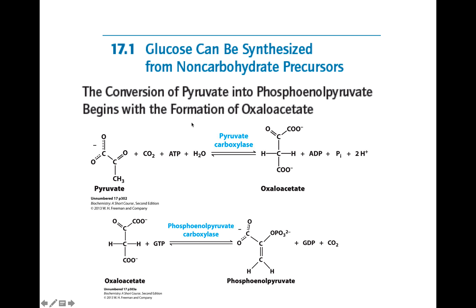If you think of glycolysis going from top down, then gluconeogenesis is going from the bottom up. The product of glycolysis is pyruvate, so that's the start of gluconeogenesis. We need to convert pyruvate back into phosphoenolpyruvate (PEP), and this is a two-step process requiring two enzymes to reverse what pyruvate kinase does in glycolysis. The first enzyme is pyruvate carboxylase, and the second is phosphoenolpyruvate carboxykinase (PEPCK).